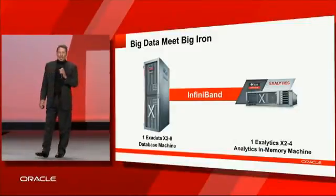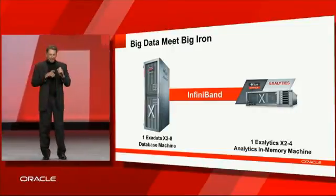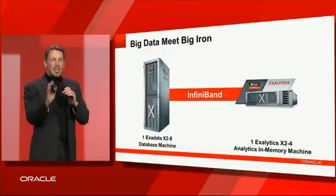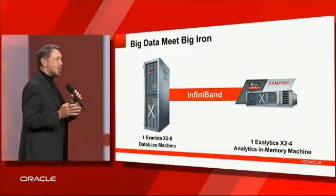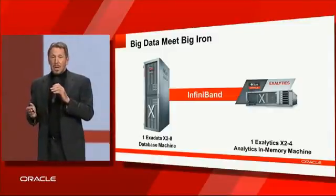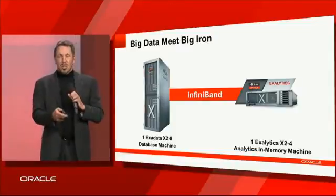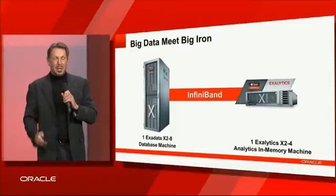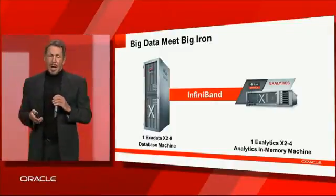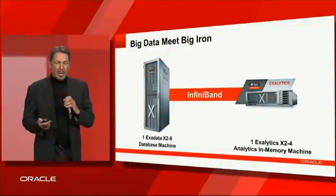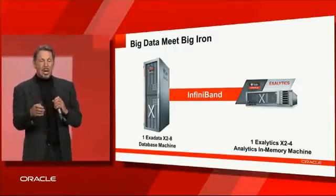We have the ideal set of tools to do real-time data processing, real-time analysis of big data. These two machines are now yesterday's news — we've announced the successors. But we did this right after the Olympics and before the X3 was available. This is the Exadata X2-8 and the Exalytics X2-4 interconnected with InfiniBand. We have all of the Oracle BI Foundation running, tuned for in-memory app data processing running in Exalytics. We have the Oracle database version 11.2 running in the Exadata database machine, interconnected by the world's fastest network.